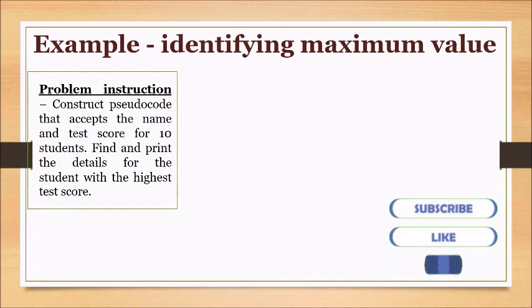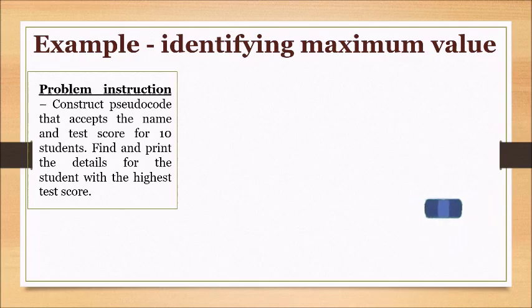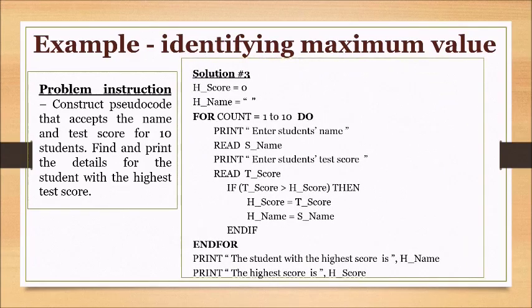Example of identifying the maximum value using loops: the following problem statement requires a pseudocode that accepts the name and test score for 10 students, then finds and displays the name and test score of the student who received the highest score. The solution starts by showing the initialization of two variables used to store the name and score of the student with the highest test score.